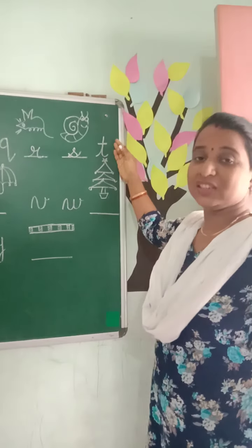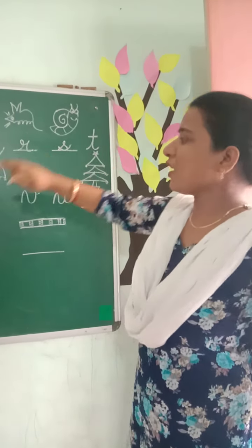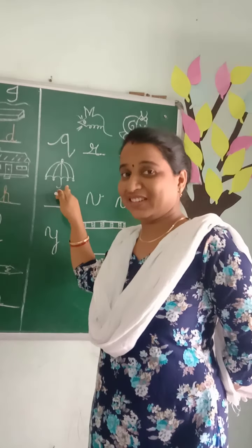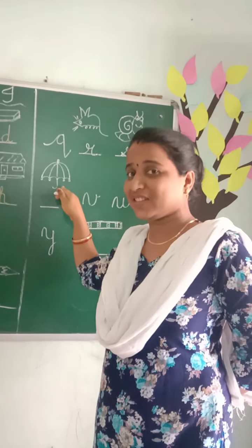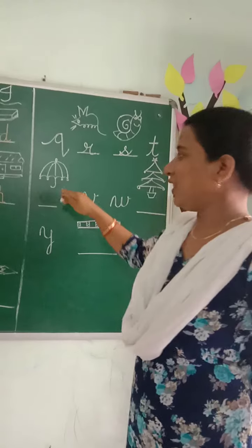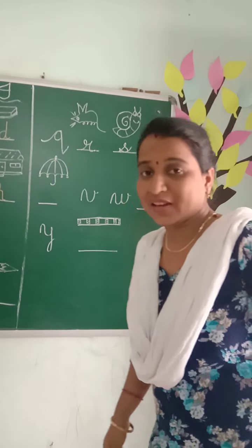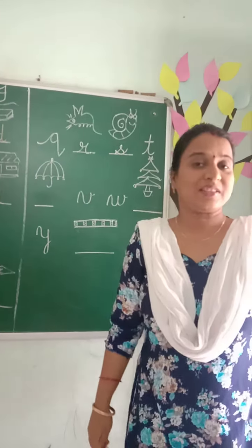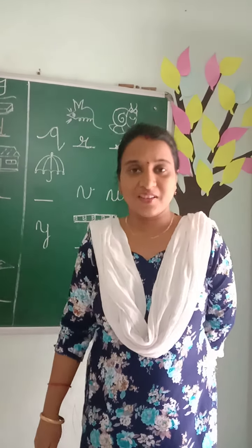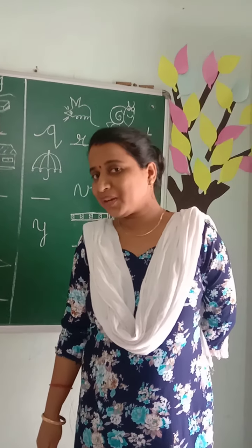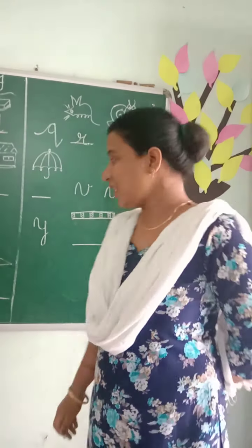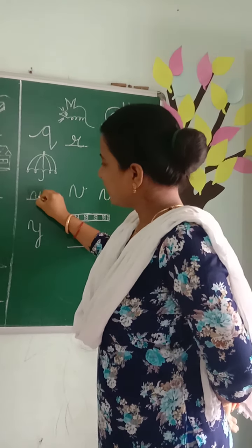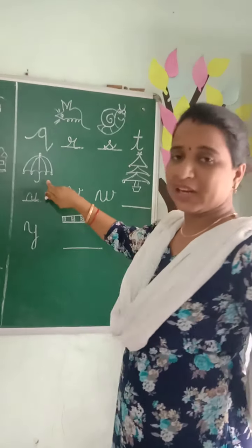Then S is followed by T. Now again come to a picture — it is very useful. It is an umbrella. Umbrella starts from which letter? U. U for umbrella.